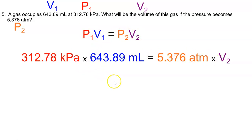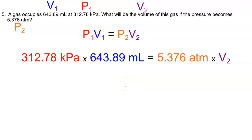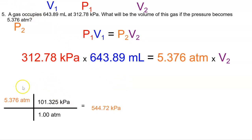Before we can solve this, we want to pause and say: what do I have two of? In this example, I have two pressures. The two pressures must be in the same unit. So if they're not in the same unit, get them to be the same unit. I have chosen to make both of my units kPa. So we're going to convert: 5.376 ATM times the conversion factor — one ATM equals 101.325 kPa — ATM cancels, leaving kPa units. Multiply across the top, divide by units on the bottom, and we have our kPa value.